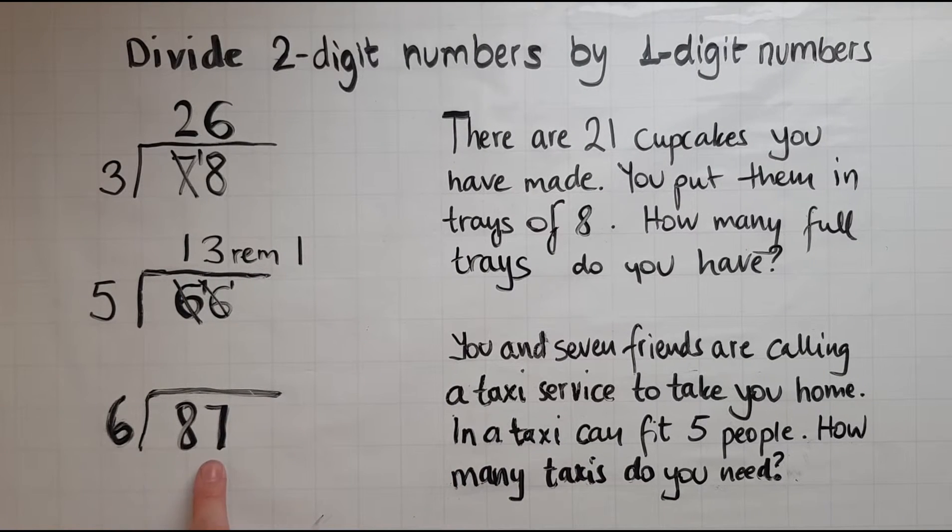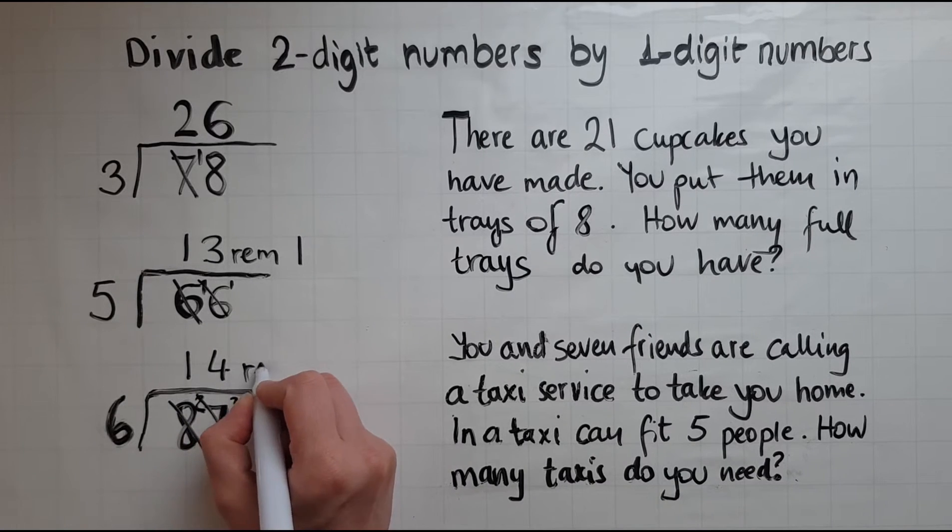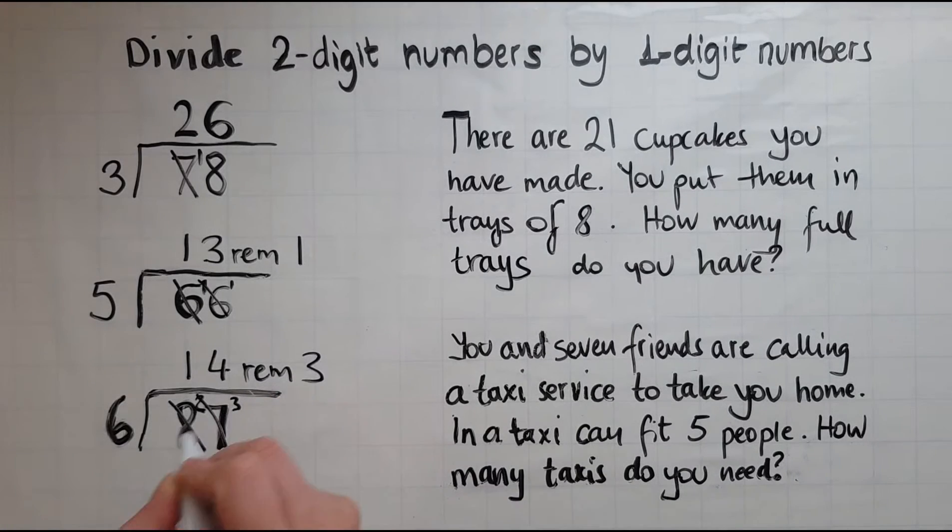Now we've got 87 divided by 6. So how many 6's fit into 8? And there is just 1 of them, 2 remaining. How many 6's would fit into 27? So 6 and 6 makes 12, and another 6 makes 18, and another 6 makes 24. 6 times 4 is 24, and there is 3 remaining. So I'll say remaining 3.